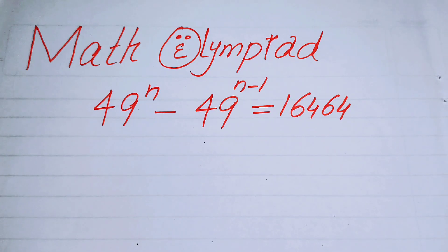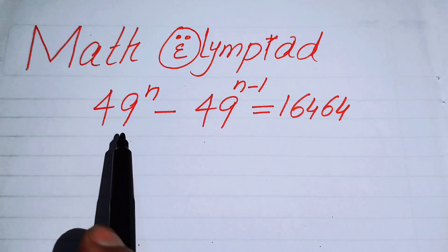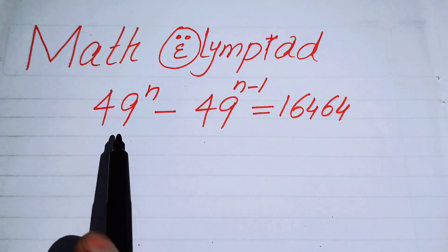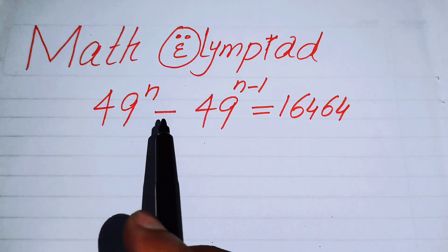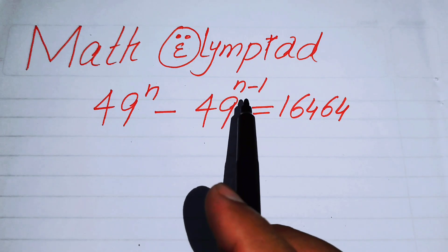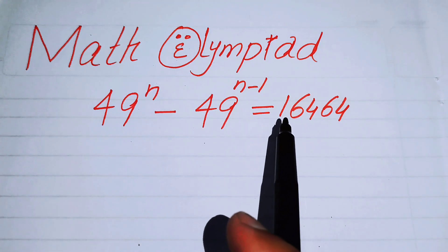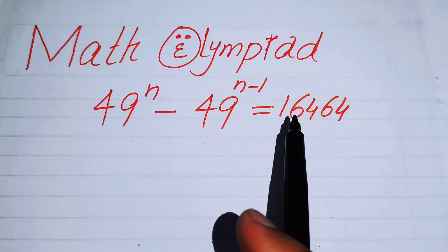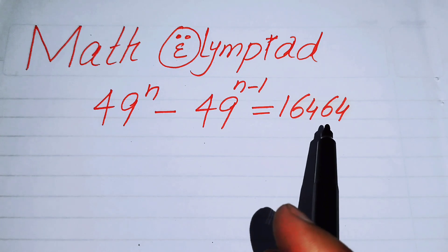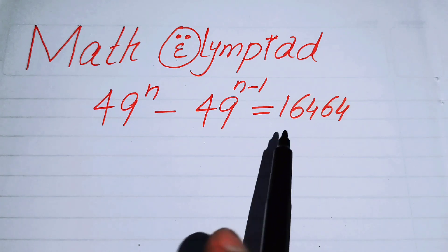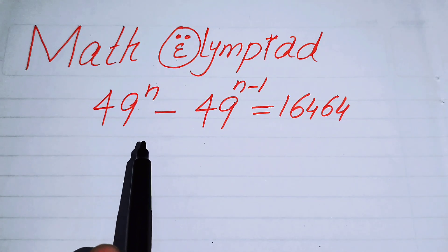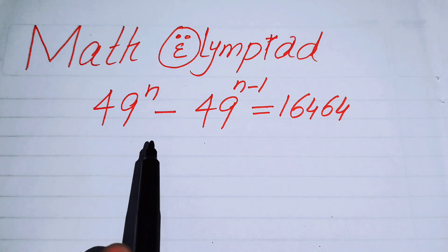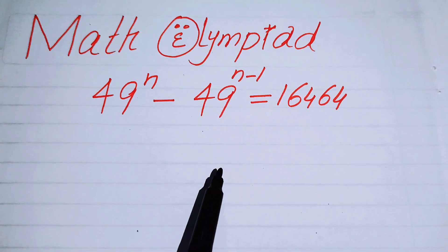Hello everyone, welcome back to the Map of Mathematics. In this video we are going to solve this nice algebra problem: 49 to the power of n minus 49 to the power of n minus 1 equals 16464. We will solve this problem for the value of n.